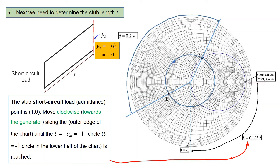Don't forget that on a short circuit terminated — and also an open circuit terminated — transmission line, the magnitude of the reflection coefficient is equal to 1 everywhere. So the voltage standing wave ratio on that stub line is actually infinite, since S equals 1 plus mod gamma over 1 minus mod gamma, and with mod gamma equal to 1, the VSWR is infinite.